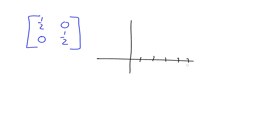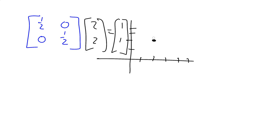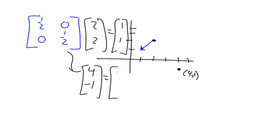Now consider the matrix one-half zero / zero one-half. If the input is (2, 2), the output is (1, 1) — it maps that point to half the distance from the origin. For the point (4, -1), we get (2, -1/2). This matrix shrinks everything toward the origin, making every point half as far away from the origin as it started.